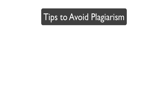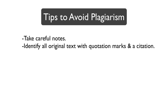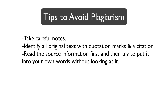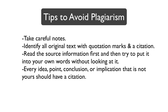Here are a few tips to avoid plagiarism when paraphrasing. When taking notes from the literature, always identify text that is a direct quote with quotation marks so that you don't confuse the original wording with your paraphrase. Any text with phrases or sentences identical to the source should be set off with quotation marks and a citation. Read the source information first and then try to put it into your own words without looking at it. Every idea, point, conclusion, or implication that is not yours should have a citation.